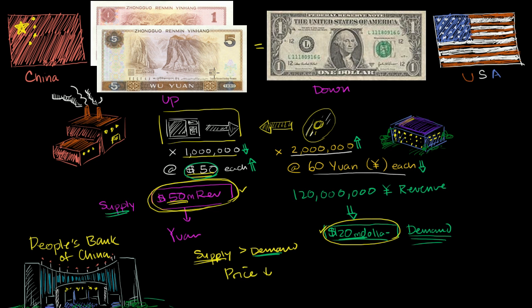Because if that were to happen, then Chinese goods would become more expensive in the United States, and it would be harder to maintain this trade imbalance. So what they do is they essentially make up for the difference in demand for the dollar.